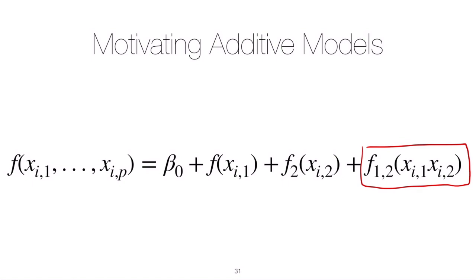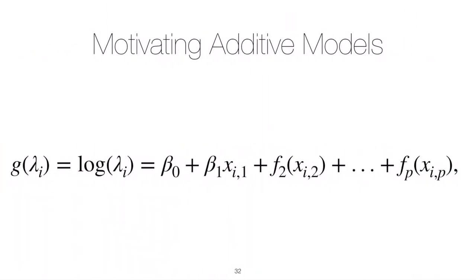Another nice thing about the additive model framework is that it can be easily extended to non-normal responses in the way that we've seen for generalized linear models. For example, if our response is Poisson, we might consider the following: we would have our link function, in this case the log link for the Poisson regression model, and we would take the log of our mean and set it equal to perhaps something like this: an intercept term β_0 plus a linear term β_1·x_1 plus some nonlinear terms, some wiggly functions of the remainder of our predictors. In this case, the log transformation of the mean of the Poisson, λ, is a predictor that involves some linear terms, some nonlinear terms, but the entire predictor is additive.